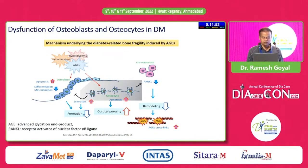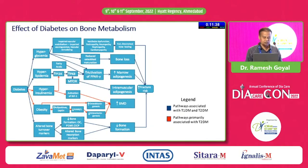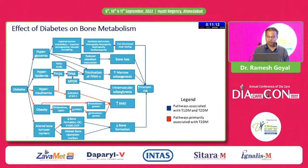The mechanism underlying diabetes-related bone fragility is induced by advanced glycation end products. Diabetes, along with risk factors like hyperglycemia, hyperlipidemia, hyperinsulinemia, and obesity, leads to altered bone turnover markers, diminished bone healing, bone loss, increased marrow adipogenesis, increased BMD (which may be partially protective), decreased bone formation, and ultimately increased fracture risk.